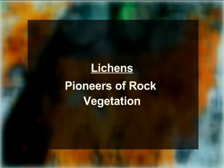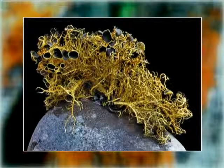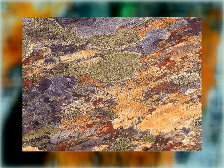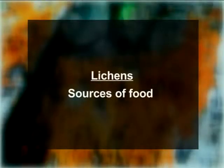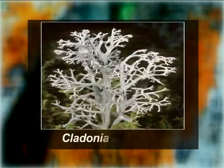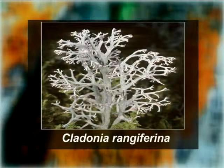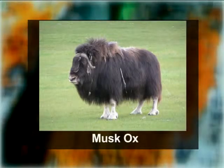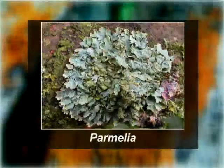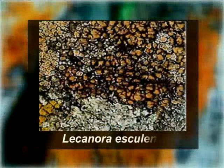Lichens are pioneers of rock vegetation as they are able to establish themselves on bare rocks, cliffs, and mountains poor in nutrients. They secrete soluble organic acids which cause weathering of rocks. Dead organic remains of lichen thalli mix with fine rock particles, which ultimately become very fertile for other plants to grow. Certain species of lichens are valuable sources of food — for example, Cladonia rangiferina, also called reindeer moss, which serves as food for reindeer, caribou, musk ox, and other wild animals of the arctic tundra zone. A few species have been used as food by man, for example Parmelia, Cetraria islandica, and Lecanora esculenta.